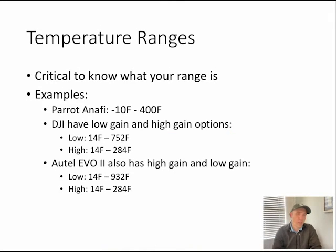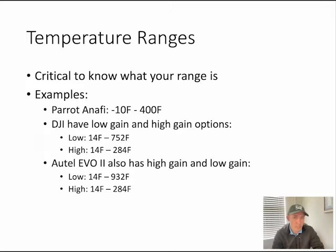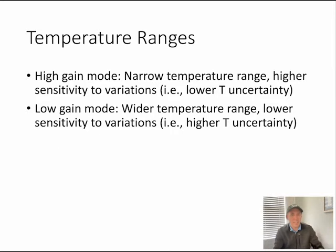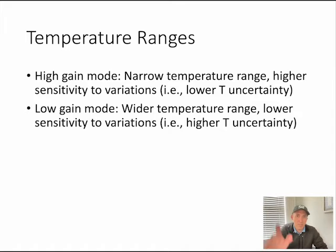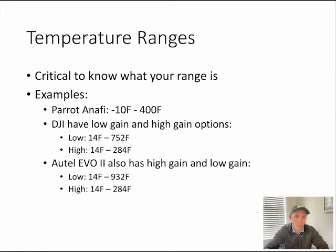You also need to think about the temperature range of your sensor. Some drones, like the Parrot Anafi, have a single temperature range of minus 10 to 400°F. Others, like DJI and some Autel drones, offer low-gain and high-gain options. High-gain means a narrower temperature range but higher sensitivity, whereas low-gain means a wider temperature range but lower sensitivity to variations. If you're trying to distinguish multiple objects from a background, high-gain mode may be more accurate. If you're trying to see how hot things are getting, you'll want low-gain mode for the higher temperature range.